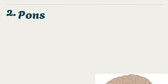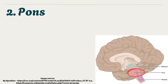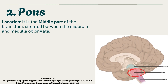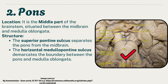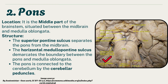The pons is the middle part of the brainstem, situated between the midbrain and medulla oblongata. The superior pontine sulcus separates the pons from the midbrain, while the horizontal medullary-pontine sulcus demarcates the boundary between the pons and medulla oblongata. The pons is connected to the cerebellum by the cerebellar peduncles.